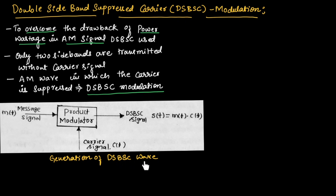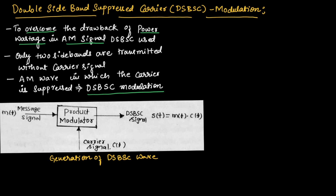Let us see the generation of DSBSC wave. This is the block diagram of generation of DSBSC signal. The device used to generate DSBSC signal is known as a product modulator. Here, the input will be the message signal and we will also have a carrier signal. The product modulator will produce the DSBSC signal, which is equal to M(t) multiplied by C(t). The most commonly used product modulator is the ring modulator.